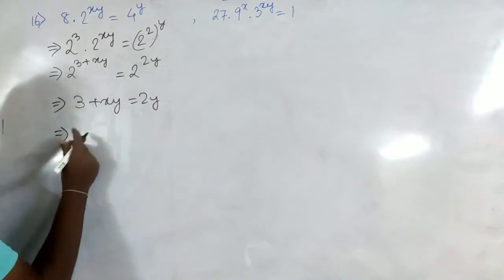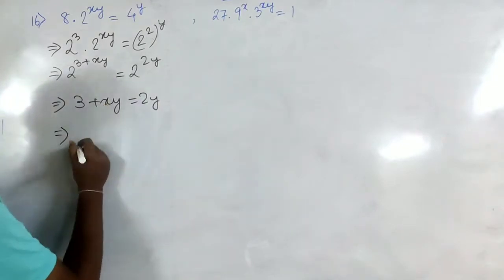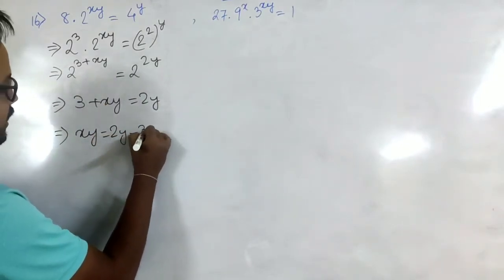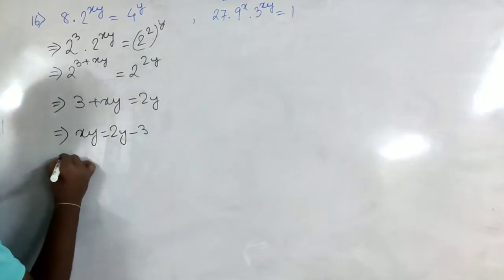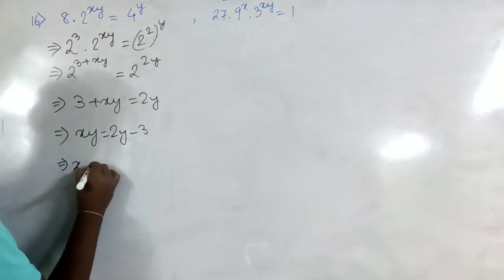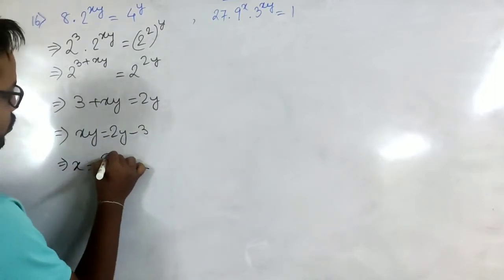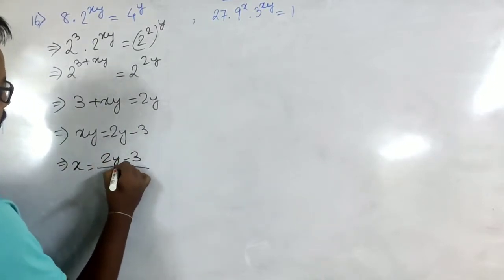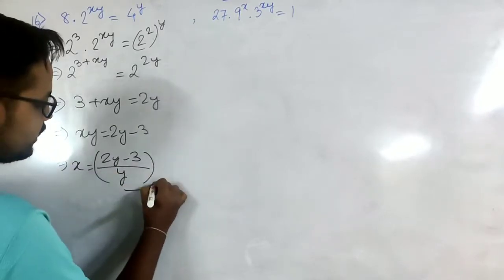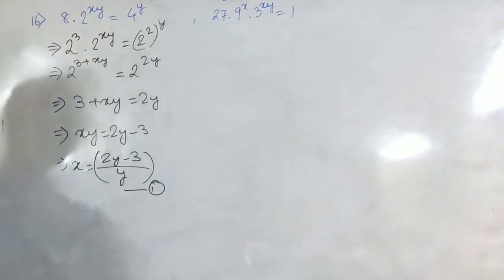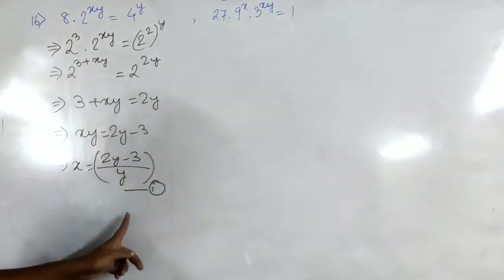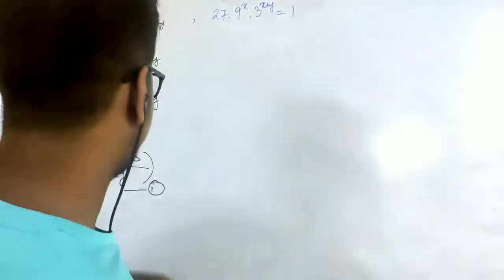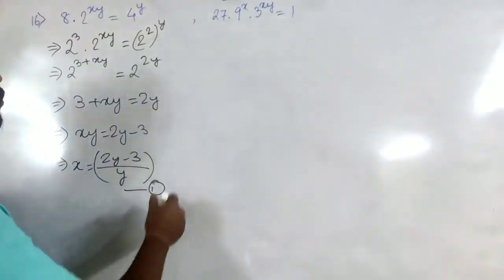From here, let us find out x. So xy will equal 2y minus 3, hence x will be equal to (2y - 3) / y. Let's take this as equation number 1, and now let's put this value in the second equation to find the value of y.